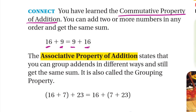Today we'll learn something new called the associative property of addition. It states that you can group addends in different ways and still get the same sum. It is also called the grouping property. Look here: we have 16 plus 7 plus 23.